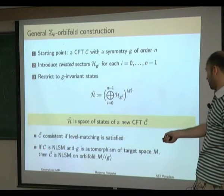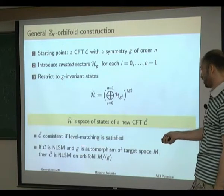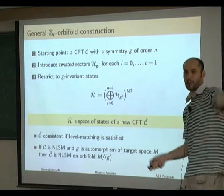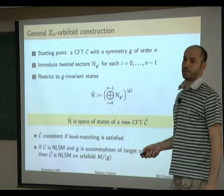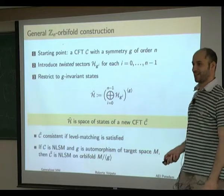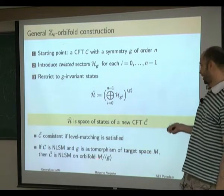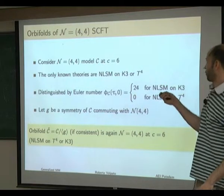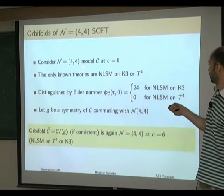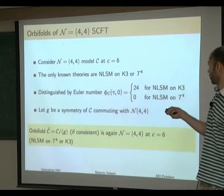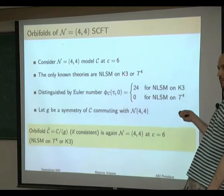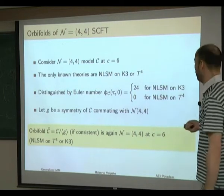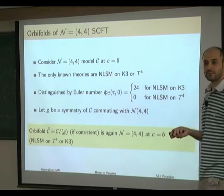The basic example is when C is a nonlinear sigma model of some target space with some automorphism, and one takes the orbifold — this turns out to be simply the nonlinear sigma model on the geometric orbifold. But this is only a special case; there are more general cases. For N=4 superconformal field theories with central charge 6, there are only two known types: nonlinear sigma models on K3 or T4. If one has such a theory with a symmetry commuting with N=4, the orbifold, if consistent, must again be an N=4 theory — so again a nonlinear sigma model on T4 or K3.